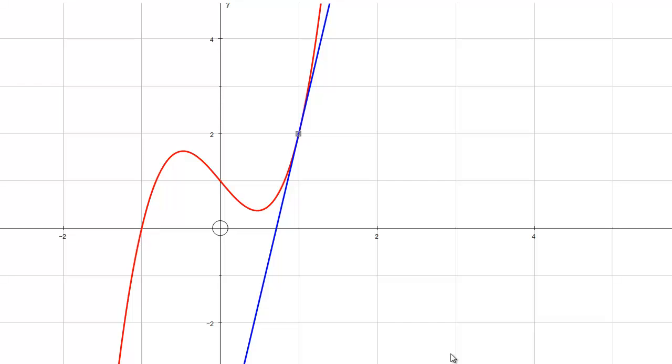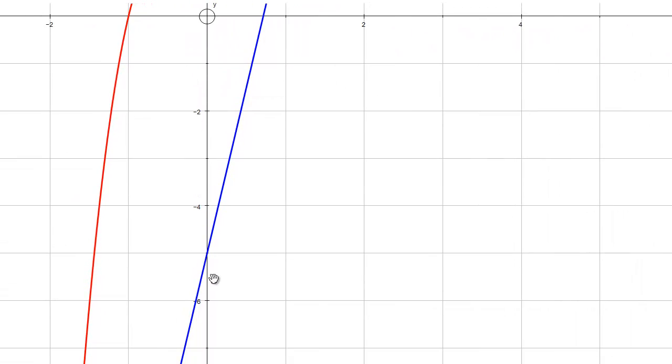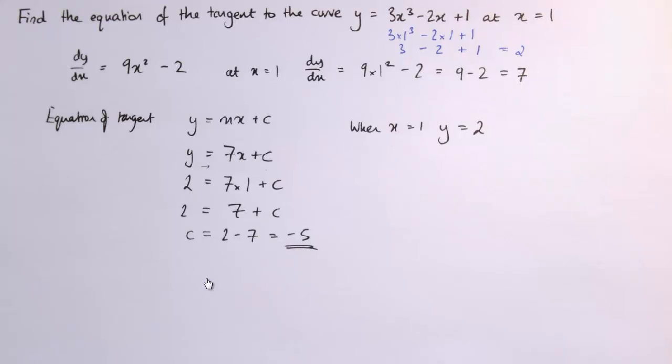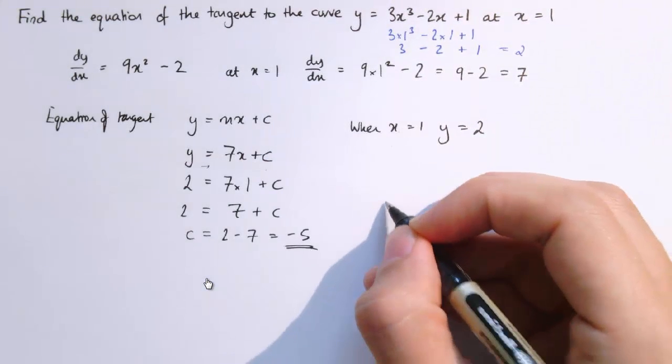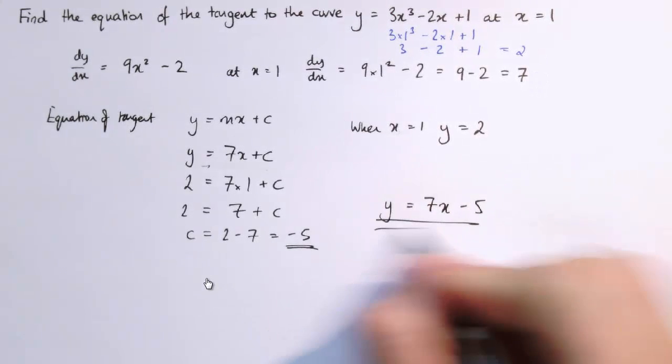If we go back to the graphing software, I could have just panned down and we can see the y-intercept here is minus 5, so it looks like we've got that right. But in general, we don't have the graph in front of us, so we need to do this just on pen and paper. That's our final answer: the equation of the tangent is y equals 7x minus 5.